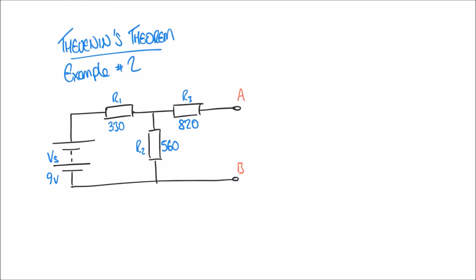The voltage divider rule involves splitting our supply voltage — in this case a 9V battery on the left — into separate voltages across each resistor. One thing to consider is that a resistor only has a voltage across it if it's carrying a current. We know Ohm's law: V equals I times R. If the current is zero, the voltage is zero. R1 and R2 are part of a complete current loop, so they carry current and have a voltage dropped across them.